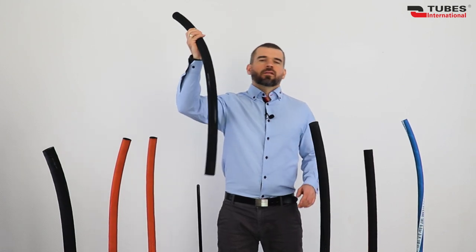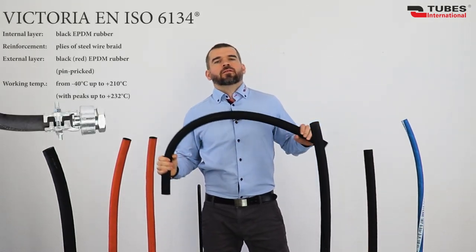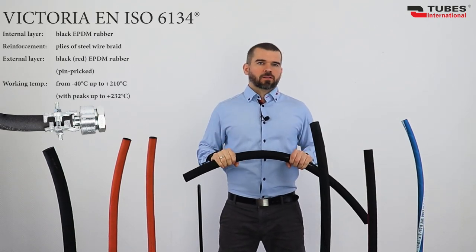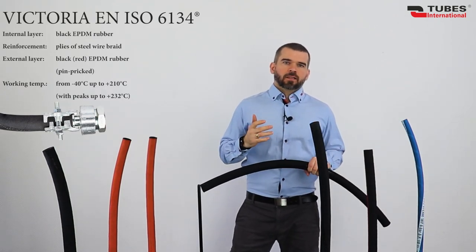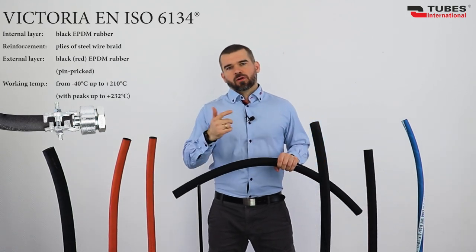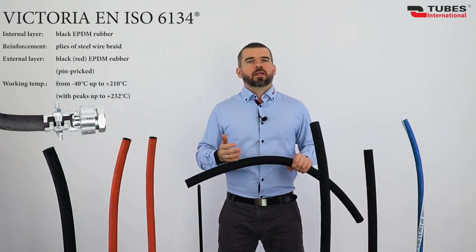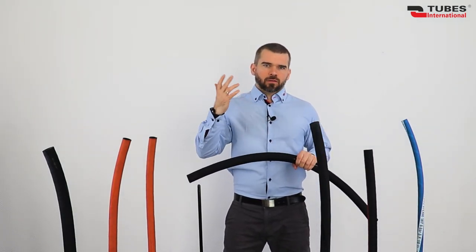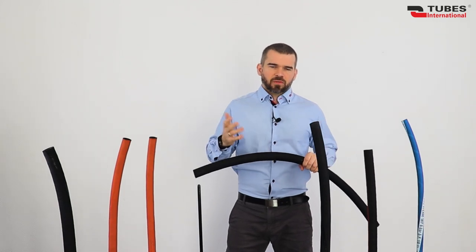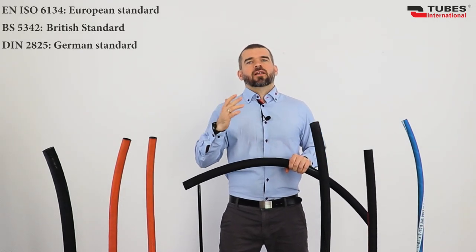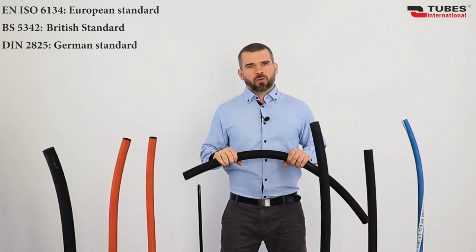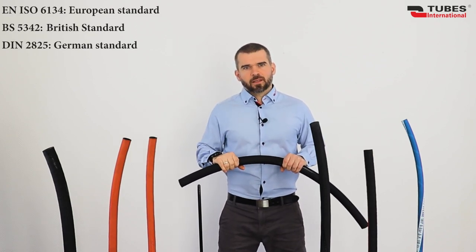Another hose is the Victoria EN ISO 6134. This is a hose that complies with the requirements of that standard. The standard specifies diameters, construction, material, labeling, test specification, and so on. There are three most notable standards for rubber steam hoses which are displayed on screen. I won't elaborate on each one here as it's quite technical.